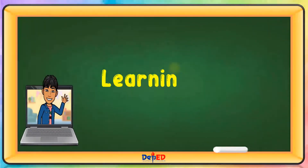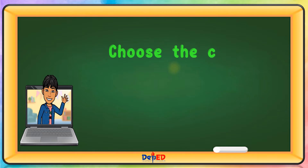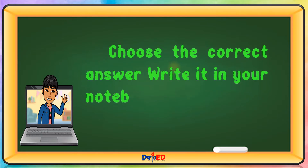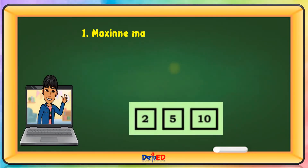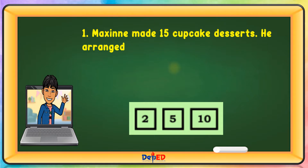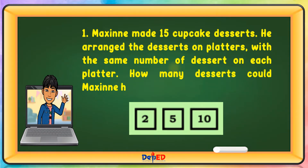Learning Task 1. Choose the correct answer and write it in your notebook. Maxine made 15 cupcake desserts. He arranged the desserts on platters with the same number of desserts on each platter. How many desserts could Maxine have put on each platter? The answer is 5.